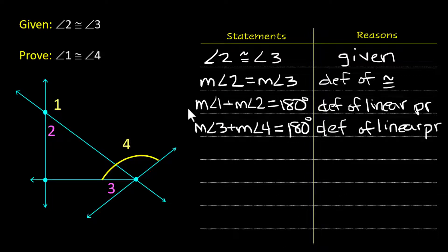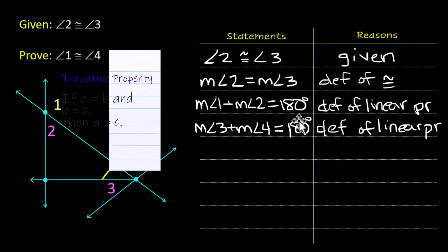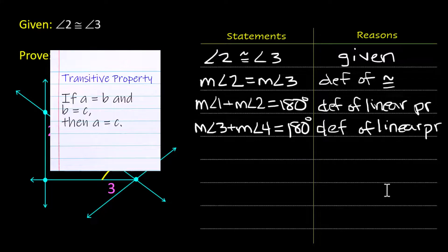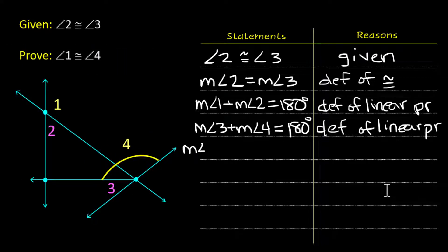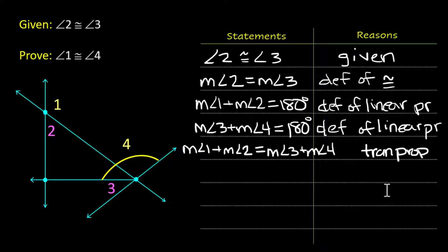Now look at this. We have one quantity equals 180 and another quantity equals 180. So these two things must equal each other from that transitive property. So we're going to just do that right now. Measure of angle 1, and the reason is it's the transitive property of equality if you have room on your paper to write the whole thing.